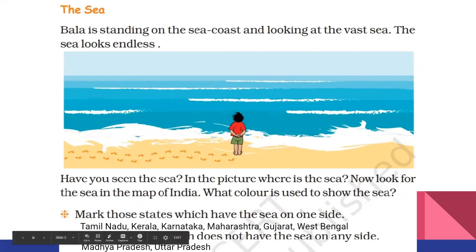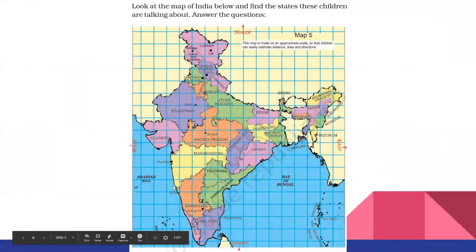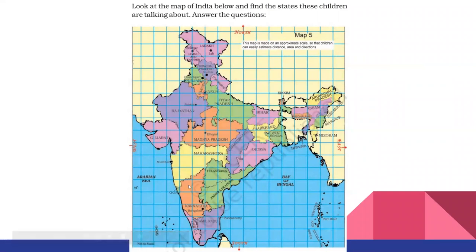Mark those states which have sea on one side. Let us see the map. Which states have sea on one side? If you start from the bottom, that is the south side — Tamil Nadu has sea. Here we have the Arabian Sea and the Indian Ocean. So all the states on the western, southern, and eastern sides have sea on one side.